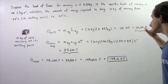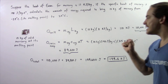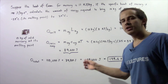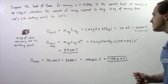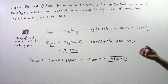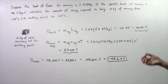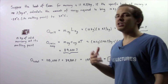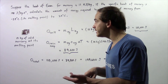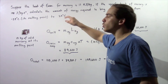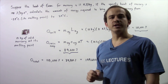We take the melting energy and add it to the heating energy: 110,000 plus 89,600 gives 199,600 joules, or equivalently 199.6 kilojoules of energy required to first melt the mercury and then bring its temperature up to 25 degrees Celsius.